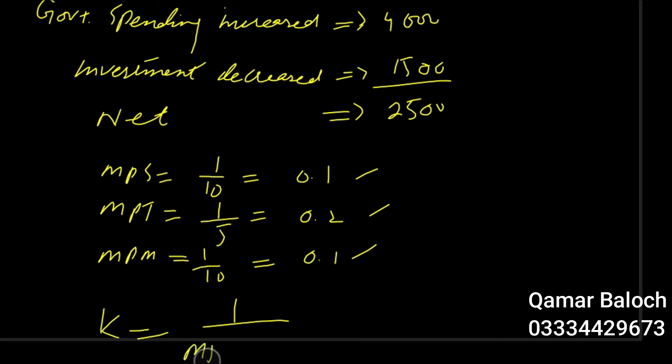Multiplier is calculated using the formula: multiplier is equal to one over MPS plus MPT plus MPM. So one over, if we add these values, this is 0.4.